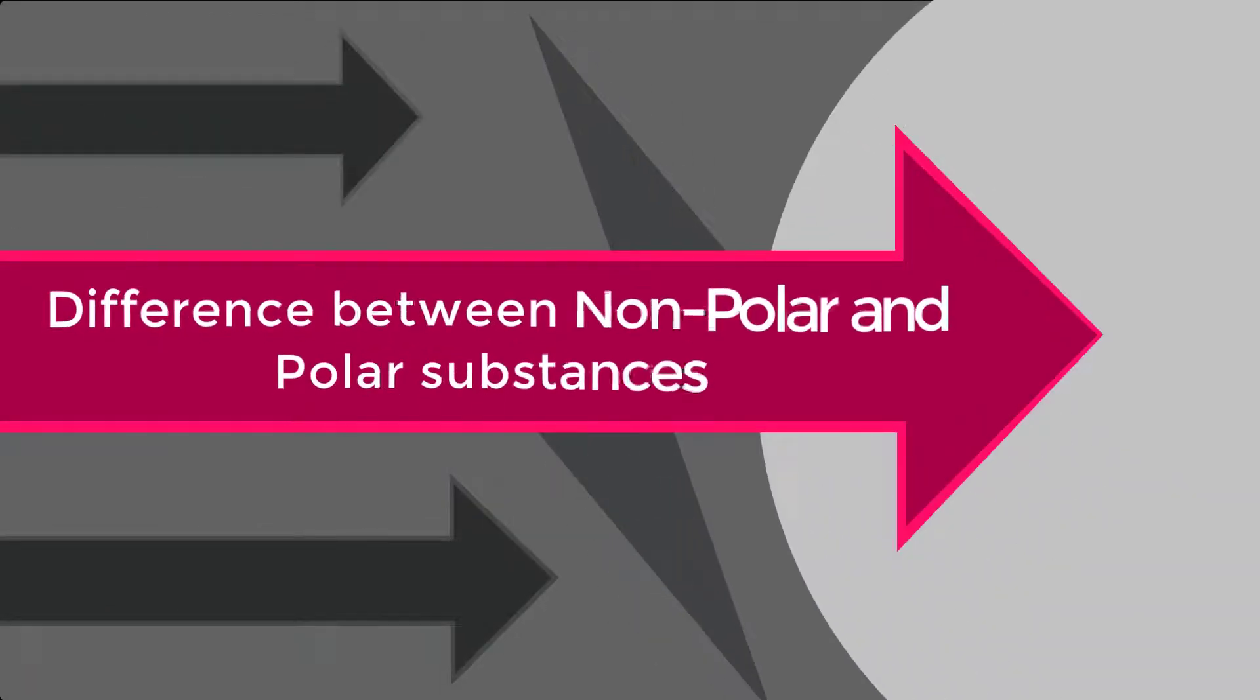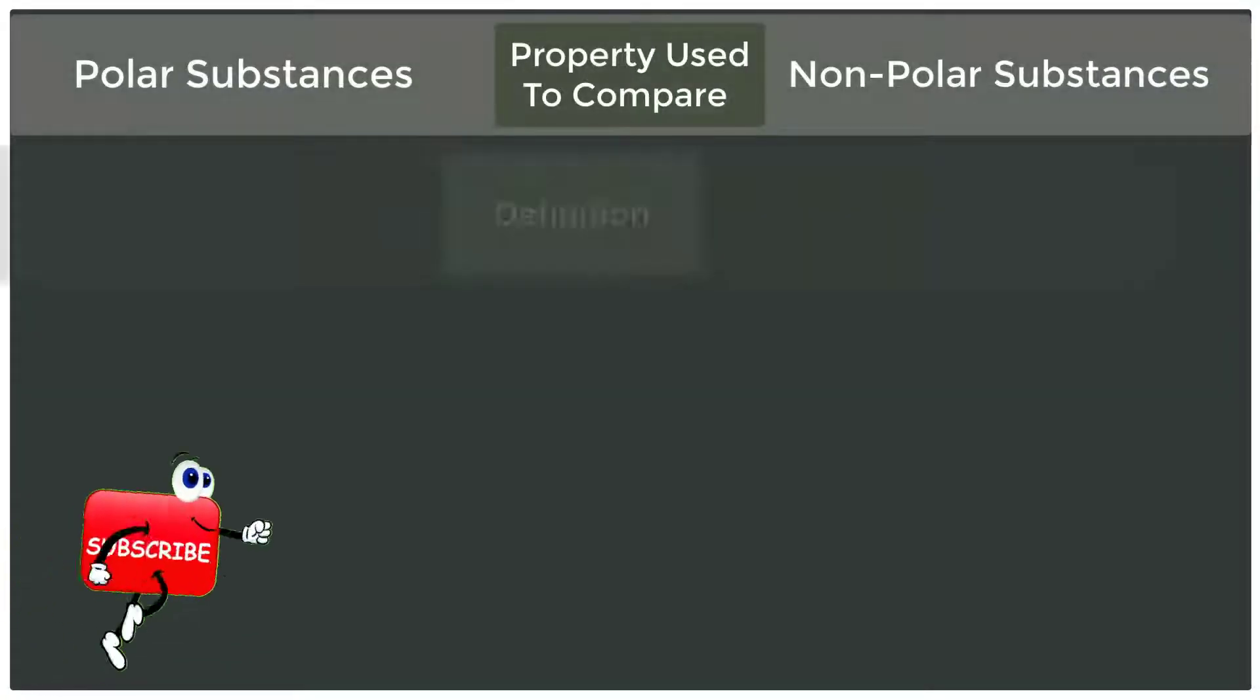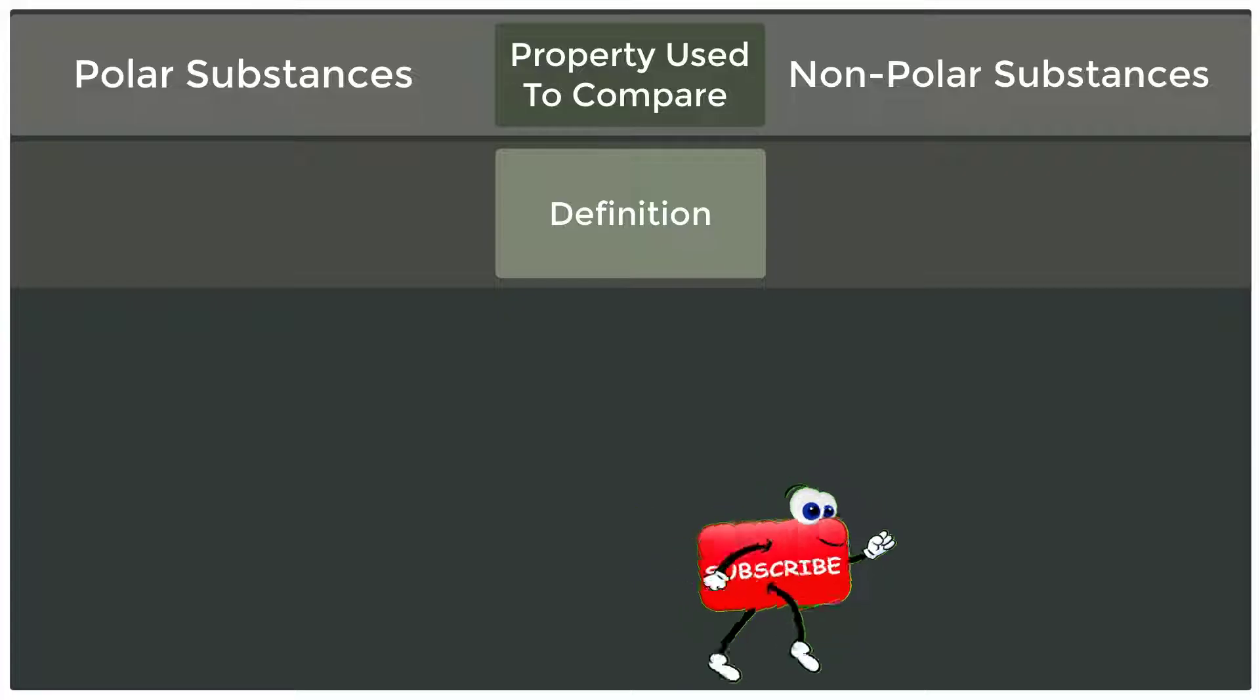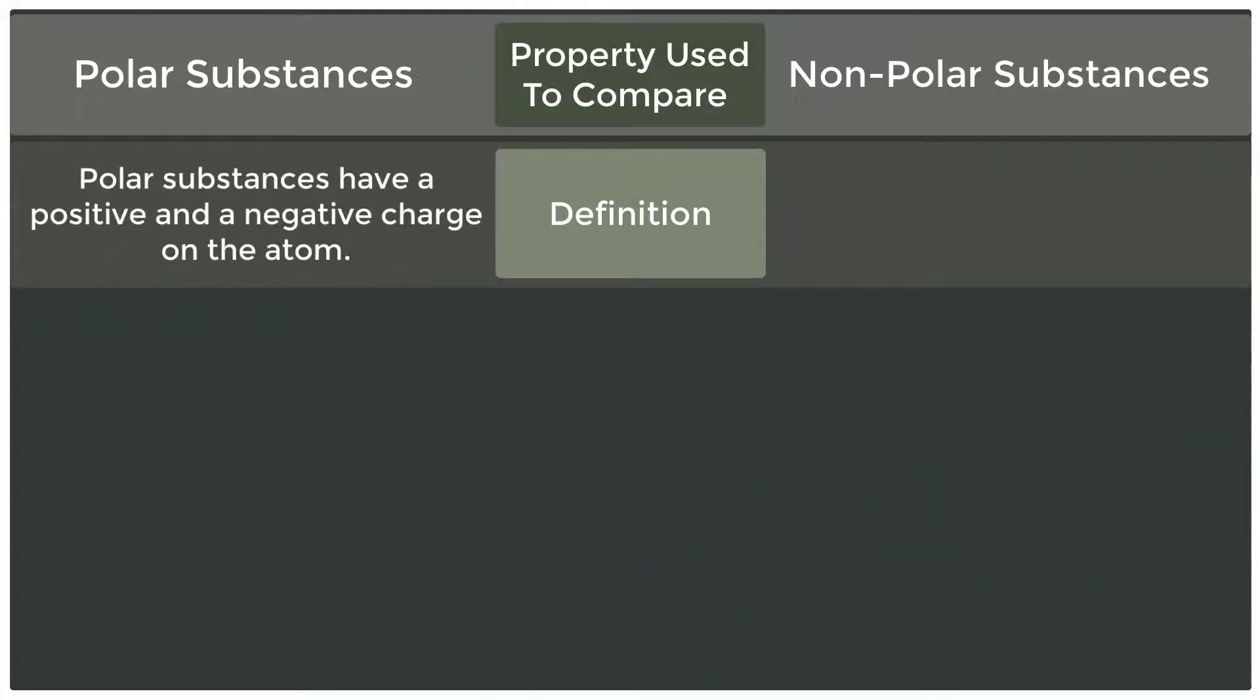Difference between nonpolar and polar substances. Definition: Polar substances have a positive and a negative charge on the atom. Nonpolar substances do not have large charges on the atom attached.